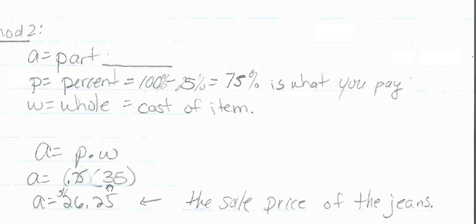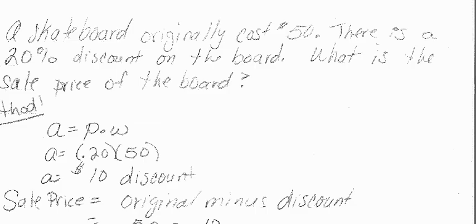Here are two more examples. We have a skateboard that originally cost $50. There's a 20% discount on the skateboard. What is the sale price? So the skateboard is your w - that's the whole cost, that's the original price - and 0.20 is our discount, so that's our p. So a equals p times w.